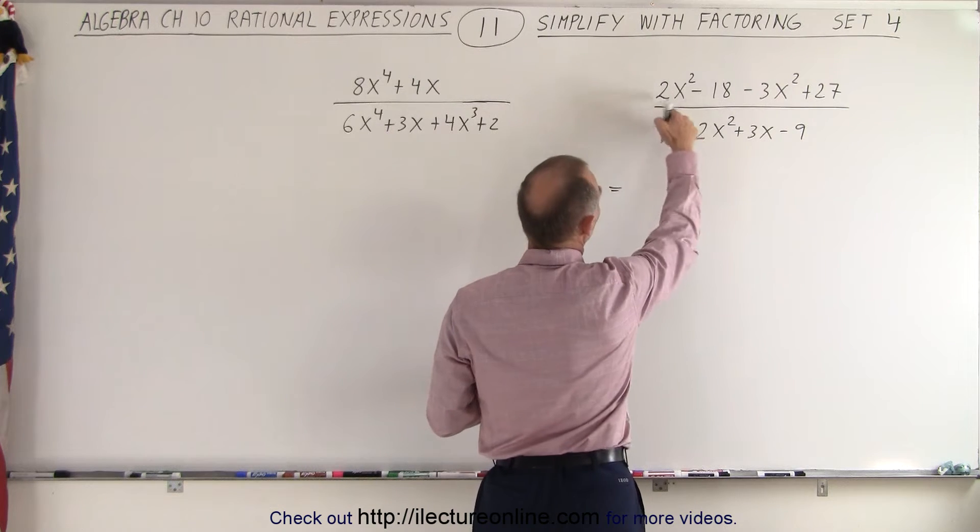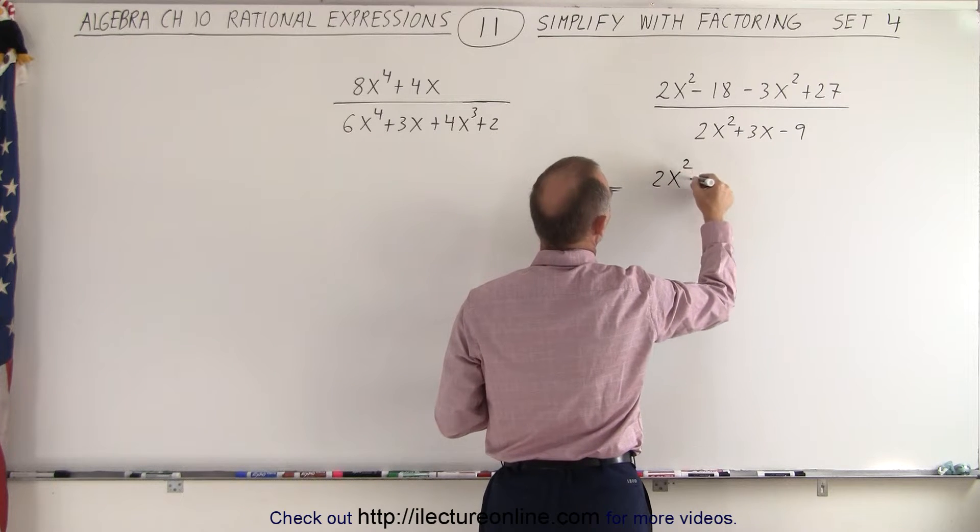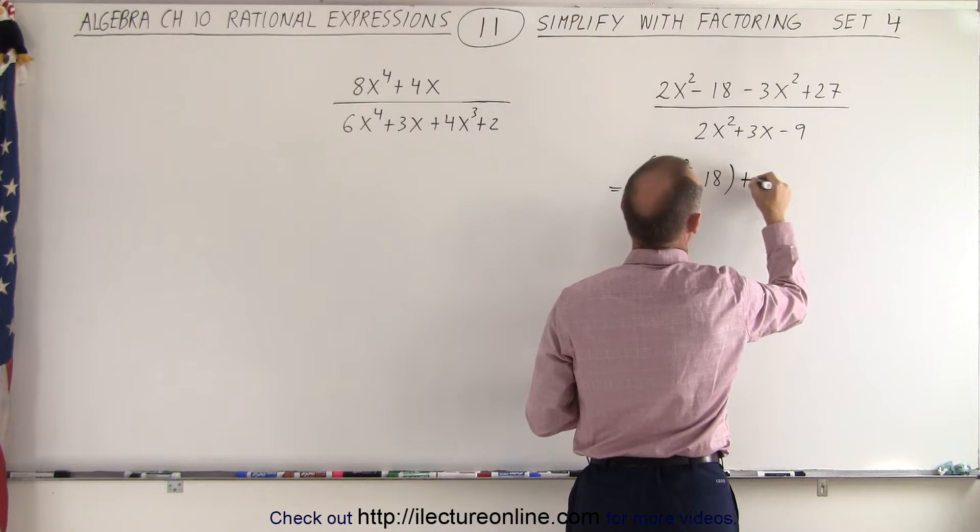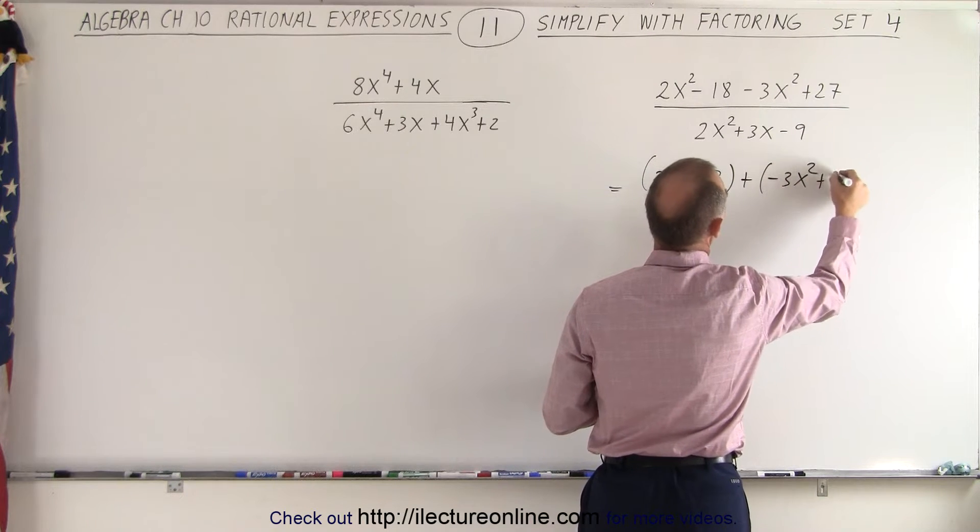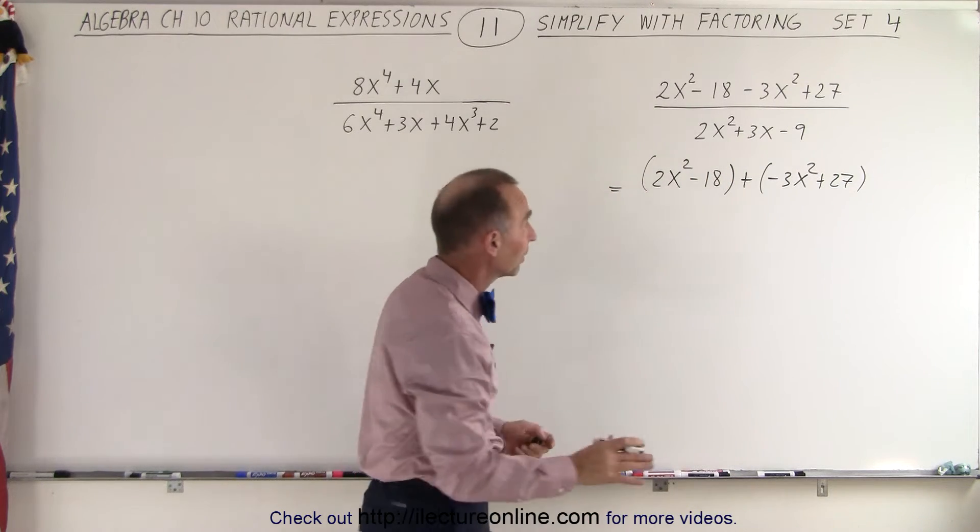So in this case, what we're going to do is we're going to group the first two together. So it would be 2x squared minus 18. So consider those as a group. And then plus a minus 3x squared plus 27. I simply wrote it like this so you can see how we're grouping it together.